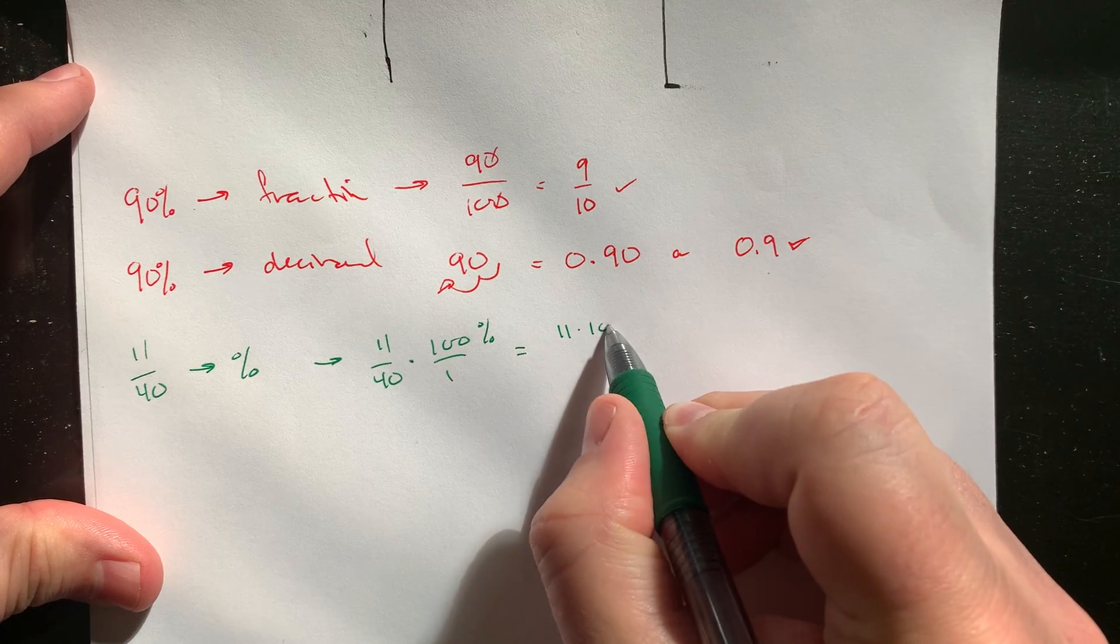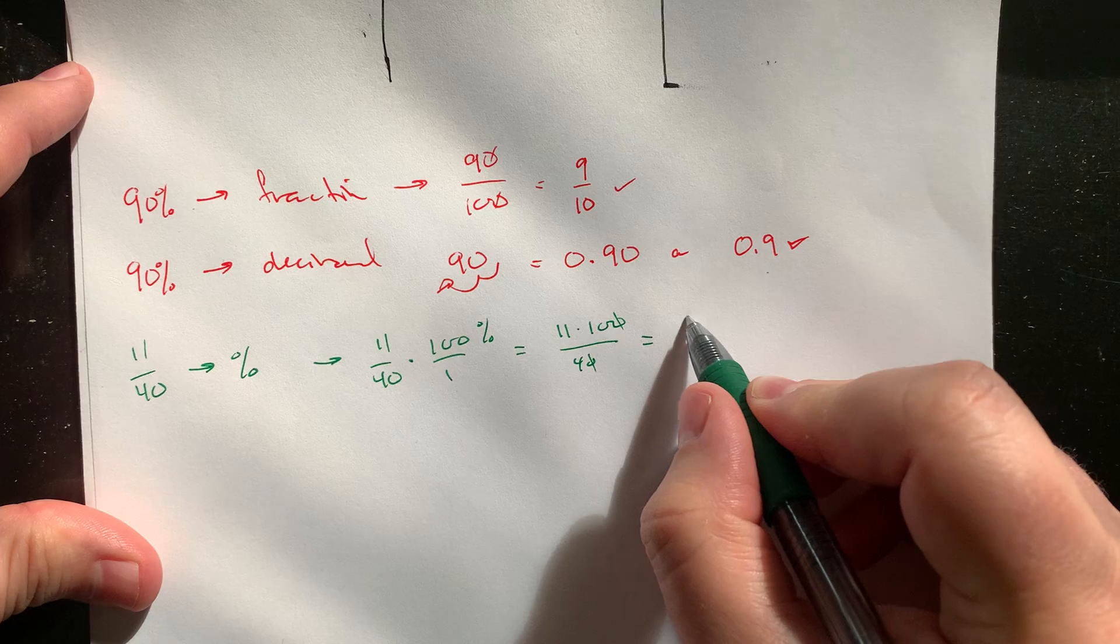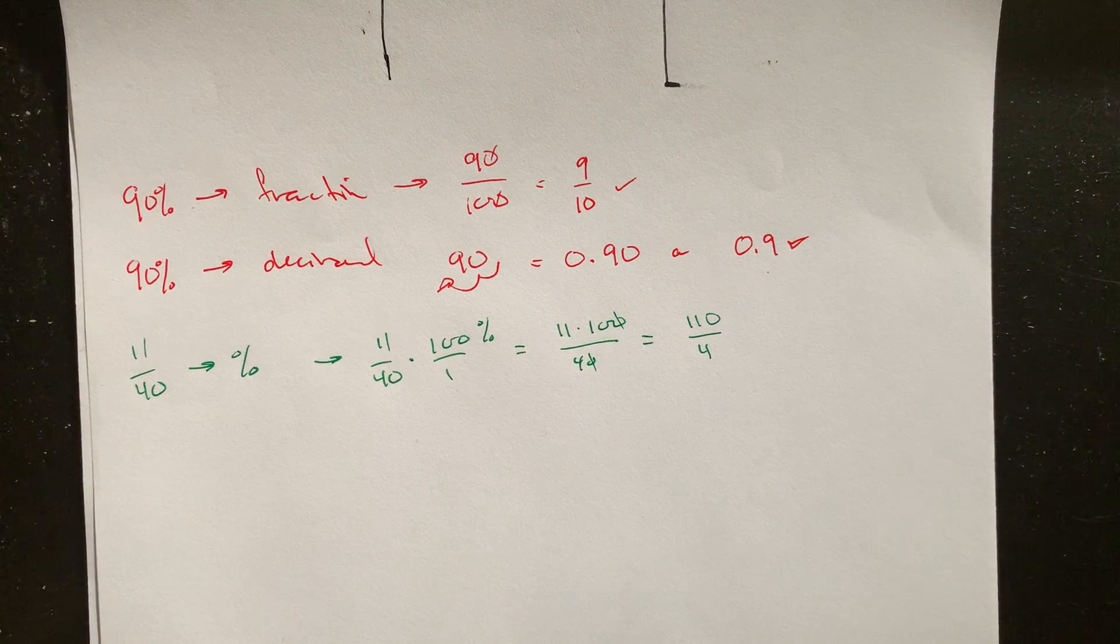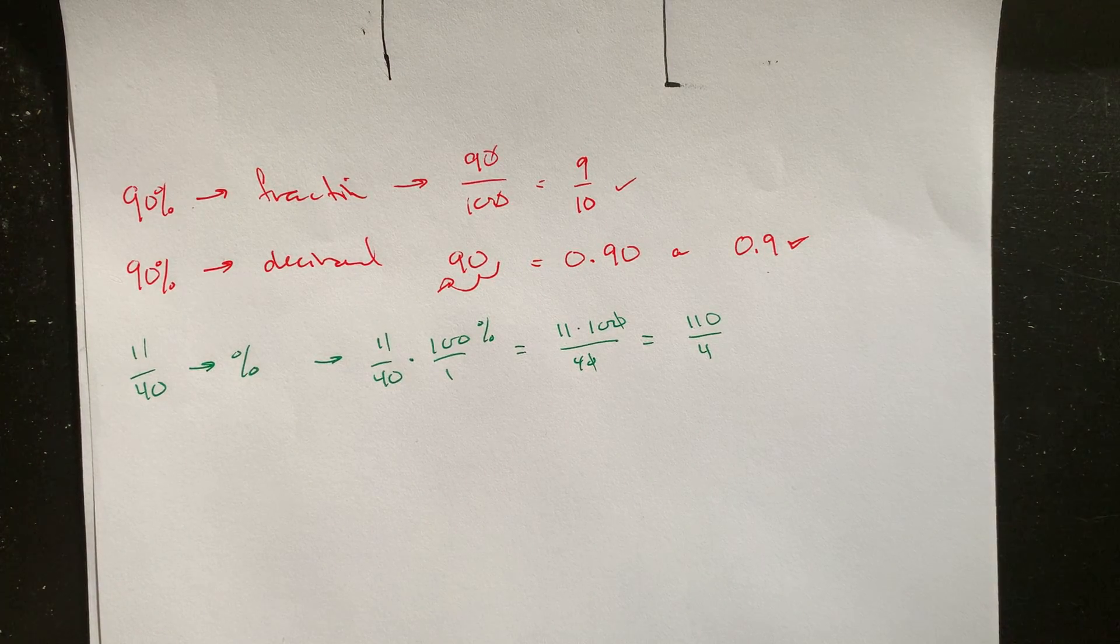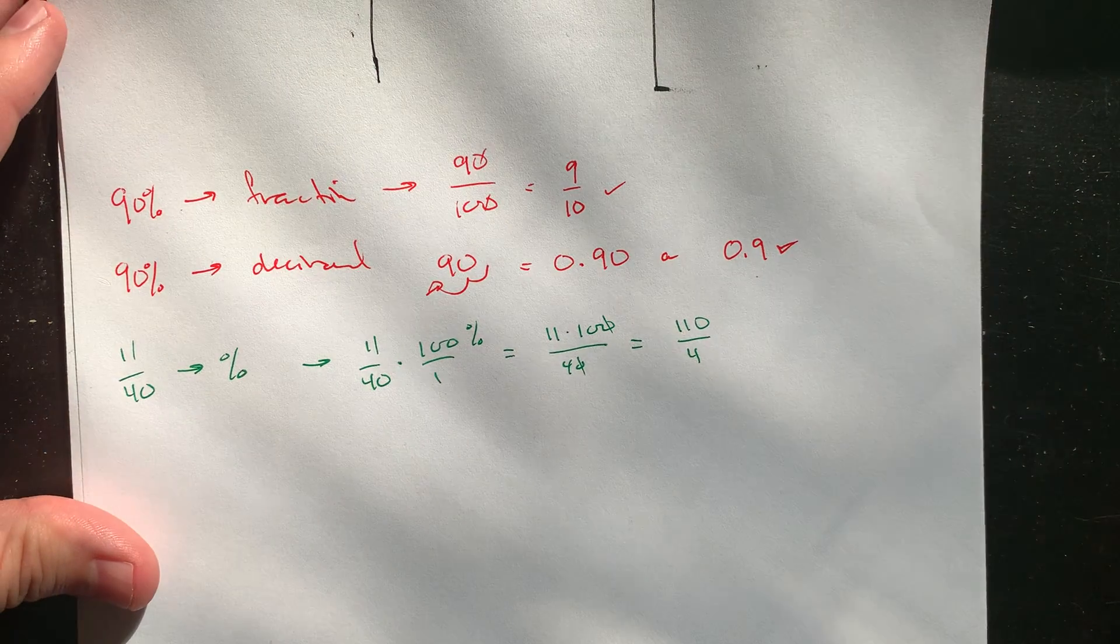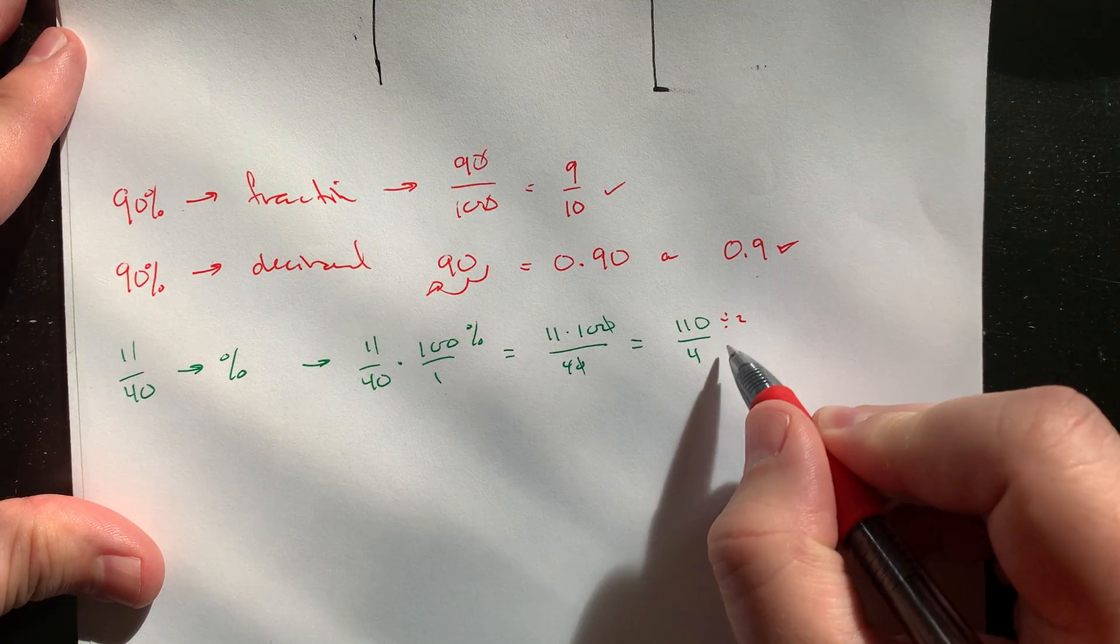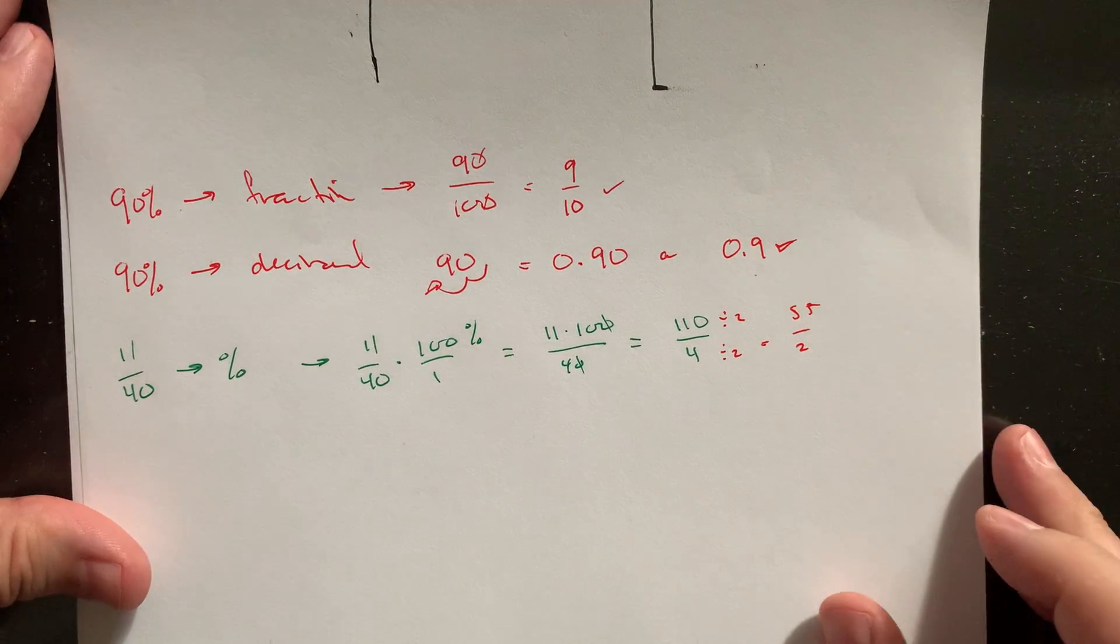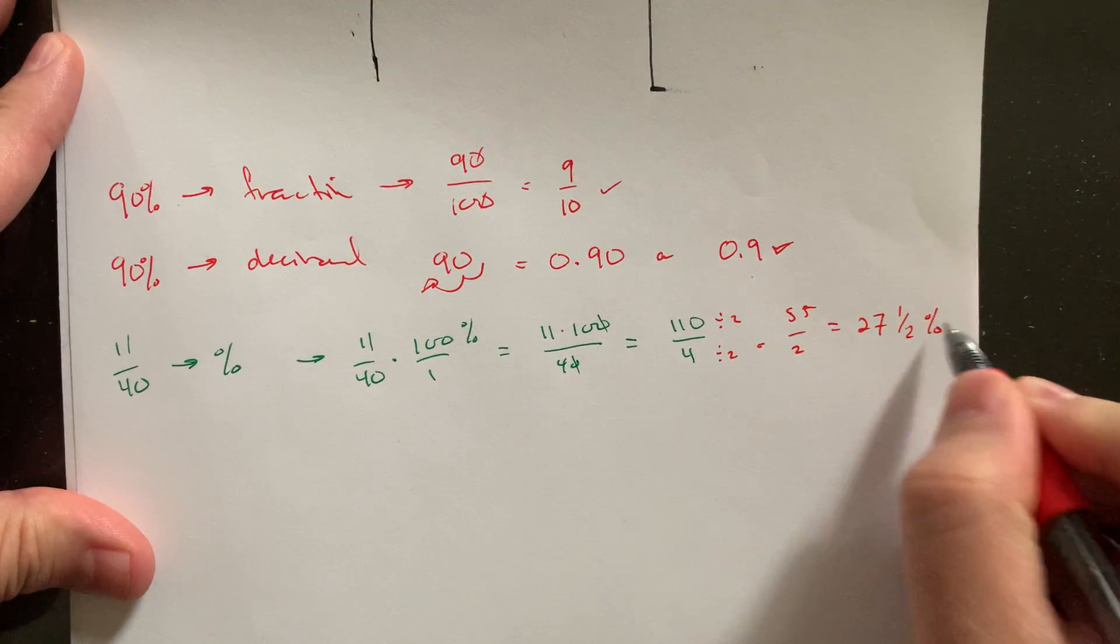What's this going to be? 11 times 100, 40. Take some of this out of here. This is like a 110 over 4. As a mixed number, 4 goes into 125 times. So this is going to be like 27. Oh, I guess we could reduce it. This would make our lives a little easier. This would reduce down to, if I did the division by 2, this would be kind of a 55 over 2. And then that we can see a little more easily would be 27 and one half percent.